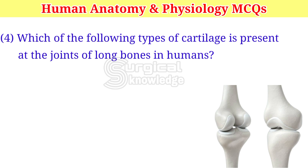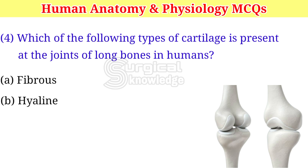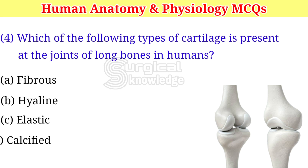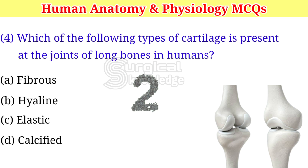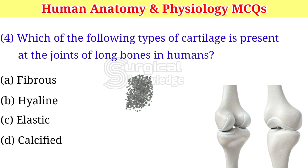Which of the following type of cartilage is present at the joints of long bones in humans? A. Fibrous. B. Hyaline. C. Elastic. D. Calcified. Right answer is hyaline.